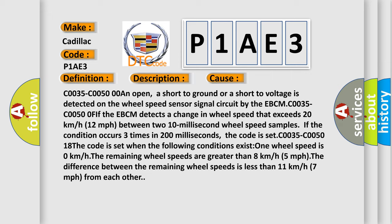The code is set when the following conditions exist: One wheel speed is zero kilometers per hour. The remaining wheel speeds are greater than 8 kilometers or 5 miles per hour. The difference between the remaining wheel speeds is less than 11 kilometers or 7 miles per hour from each other.